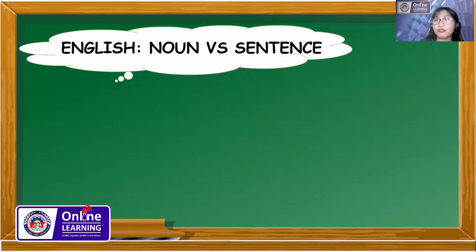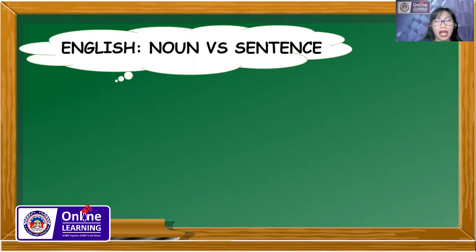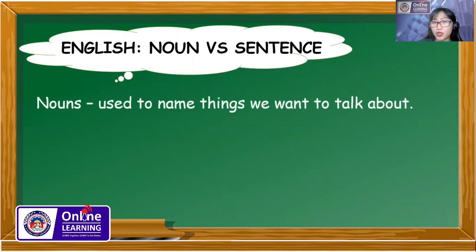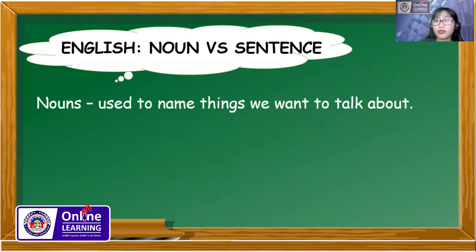We have to define first what a noun is and then what a sentence is. A noun is used to name things we want to talk about, such as your name, the name of a place, the name of your pets, or whatsoever. That is the use of nouns.